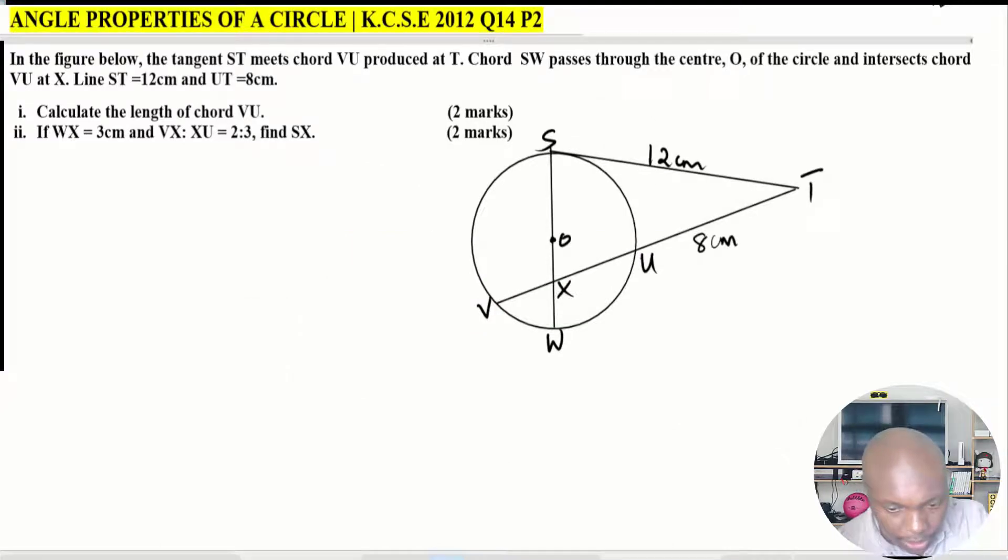The diagram is there, all the labels are given, all the measurements are given. The only measurement that is not given is WX, which is here, which is 3. Let's go to the first part of the question. How are you supposed to get VU? You need to think of the property that you're going to use to assist you to get that length.